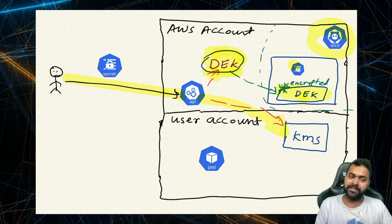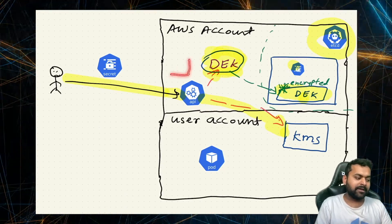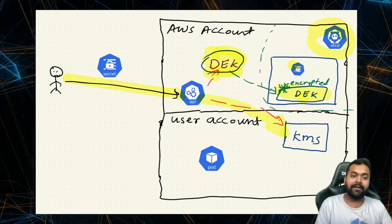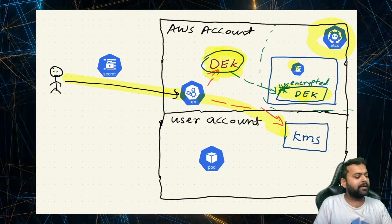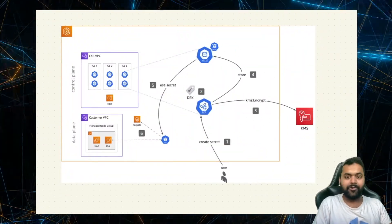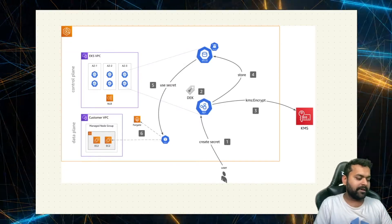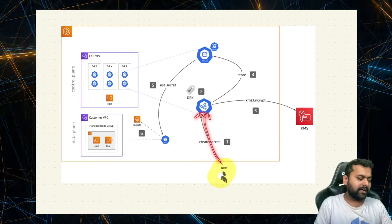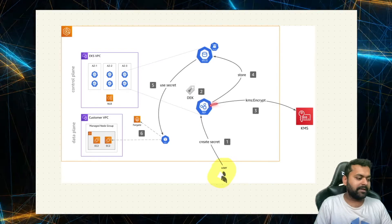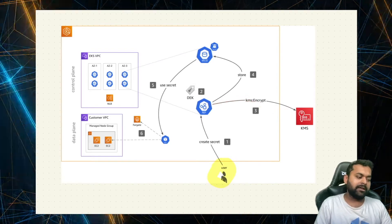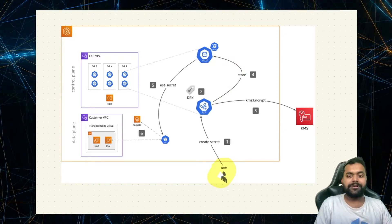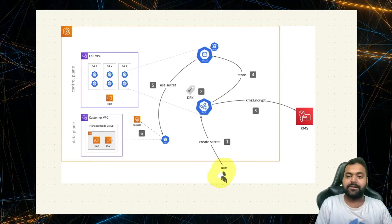There are more additional features to it as well. For example, the API server does have some sort of cache so that it doesn't make a lot of API calls to the KMS key. Now the diagram from the AWS blog post looks something like this — pretty neat. This is the user; once they create the secret, the API server has a data encryption key, then it makes a call to the KMS key in our account, encrypts the data encryption key and the secret, and then stores it into etcd, which ensures one more layer of security as per the defense in depth strategy.